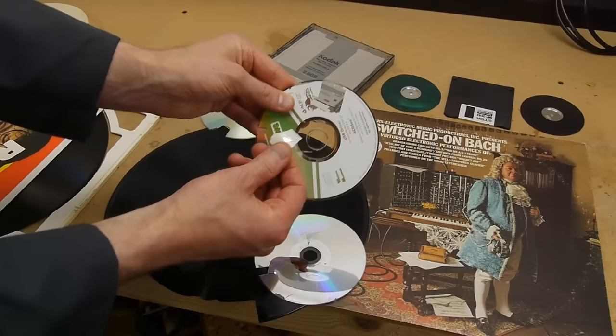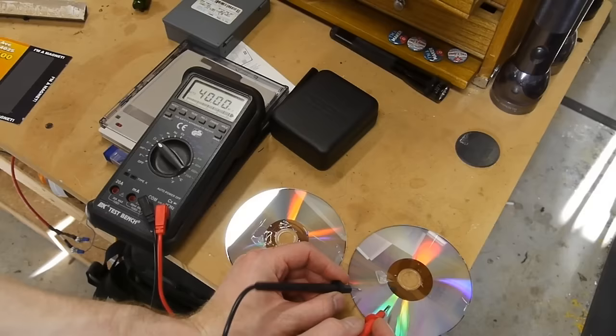And now we have a really fresh sample of aluminum here. If you come in with a multimeter this is actually quite conductive. This is bare aluminum exposed. So here's what the CD-ROM looks like.